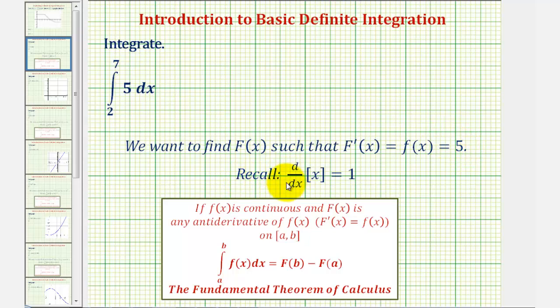And since we know the derivative of x is equal to one, we should be able to recognize that the derivative of five x would be equal to five. Of course, we could use five x plus a constant, but when we perform the subtraction here, the constant would subtract out. And it says here we can use any anti-derivative.